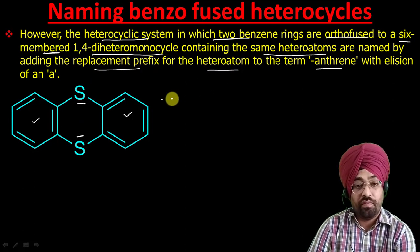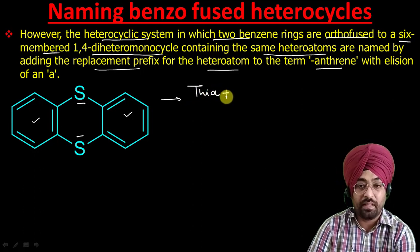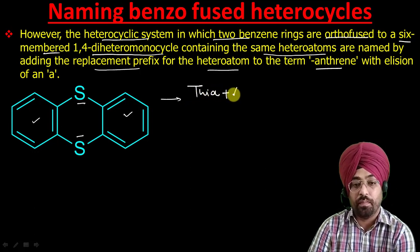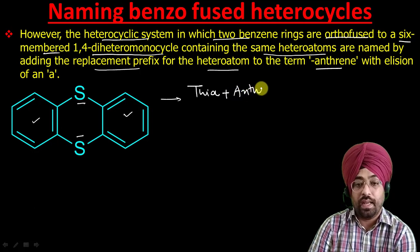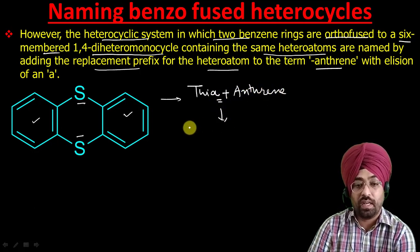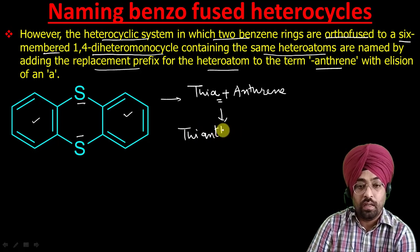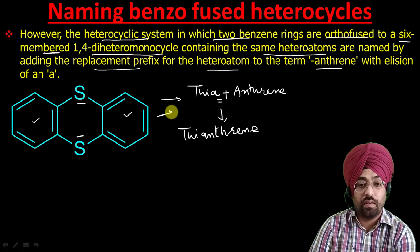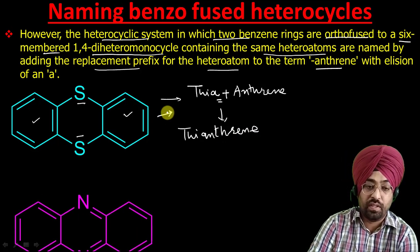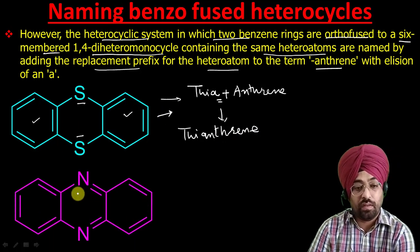The prefix for sulfur is 'thia,' and we add 'anthrine,' omitting the terminal 'a' from 'thia' before 'anthrine.' So the name becomes thianthrene. Thianthrene is the name of this compound.